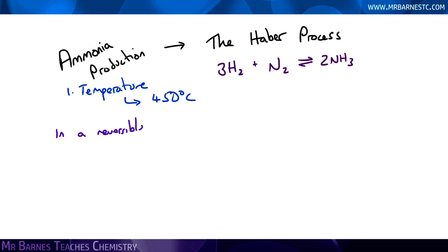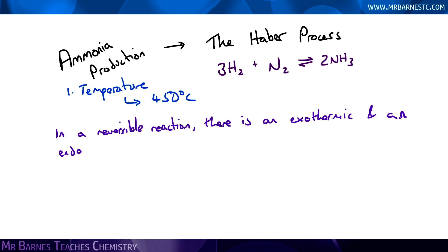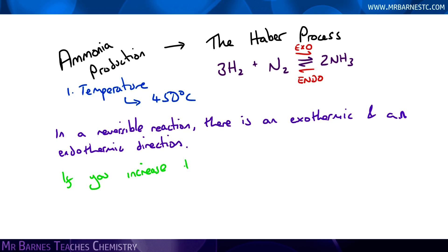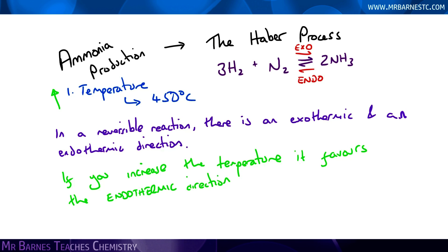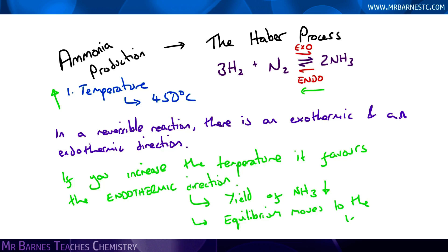Starting with temperature, we've already said that it occurs at 450 degrees C. In a reversible reaction there is both an exothermic and an endothermic direction. For this one, the forward reaction is exothermic and the backwards reaction is endothermic. If you increase the temperature, it's always going to favour the endothermic direction, which in this case is backwards. That means the yield — the amount of NH₃ you get — is going to go down, and the equilibrium is going to shift to the left.